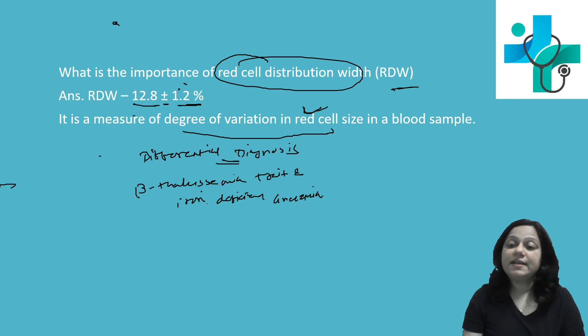It is reduced in thalassemia trait and it is high in iron deficiency anemia. So, that is the importance of red cell distribution width.